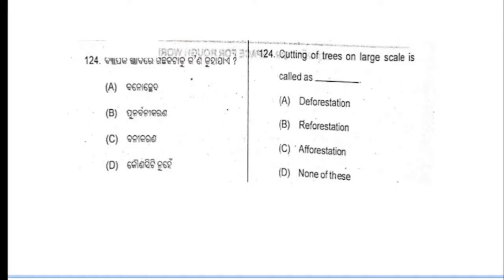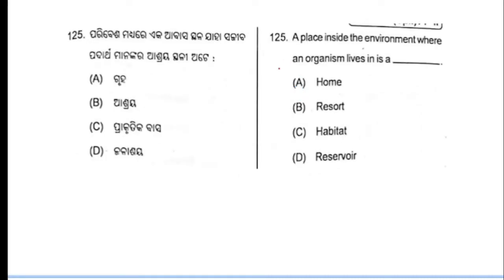Question number 124, option number A is the correct answer. Now moving to next question. Question number 125: a place inside the environment where an organism lives is a habitat. Question number 125, option number C is the correct answer.